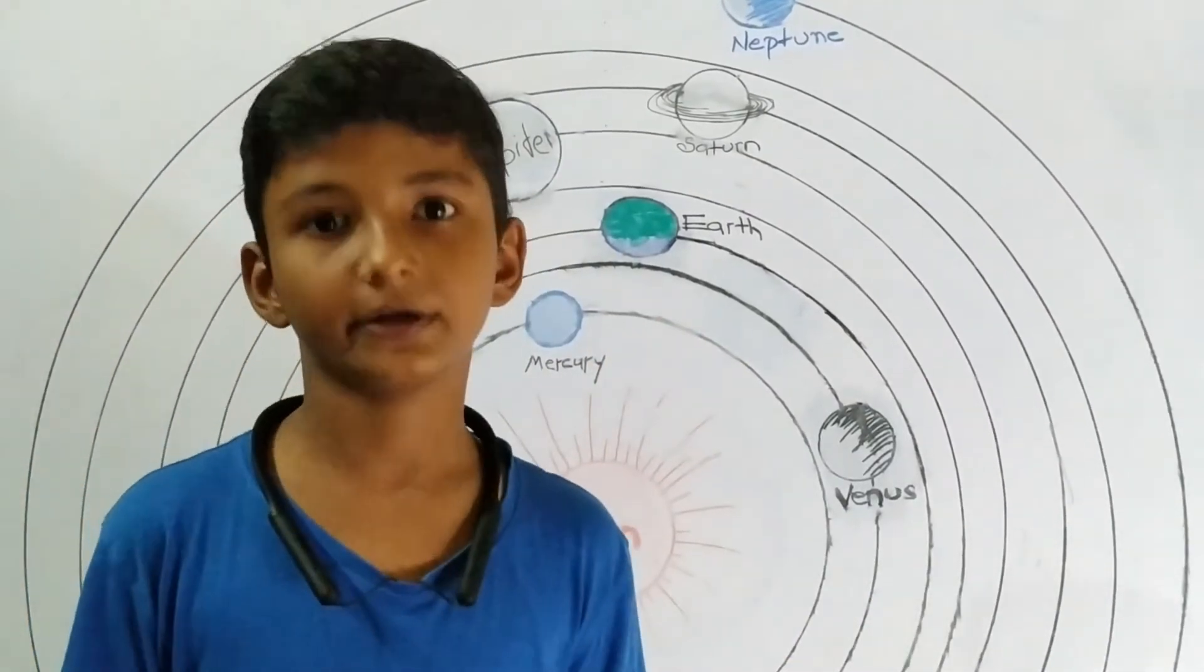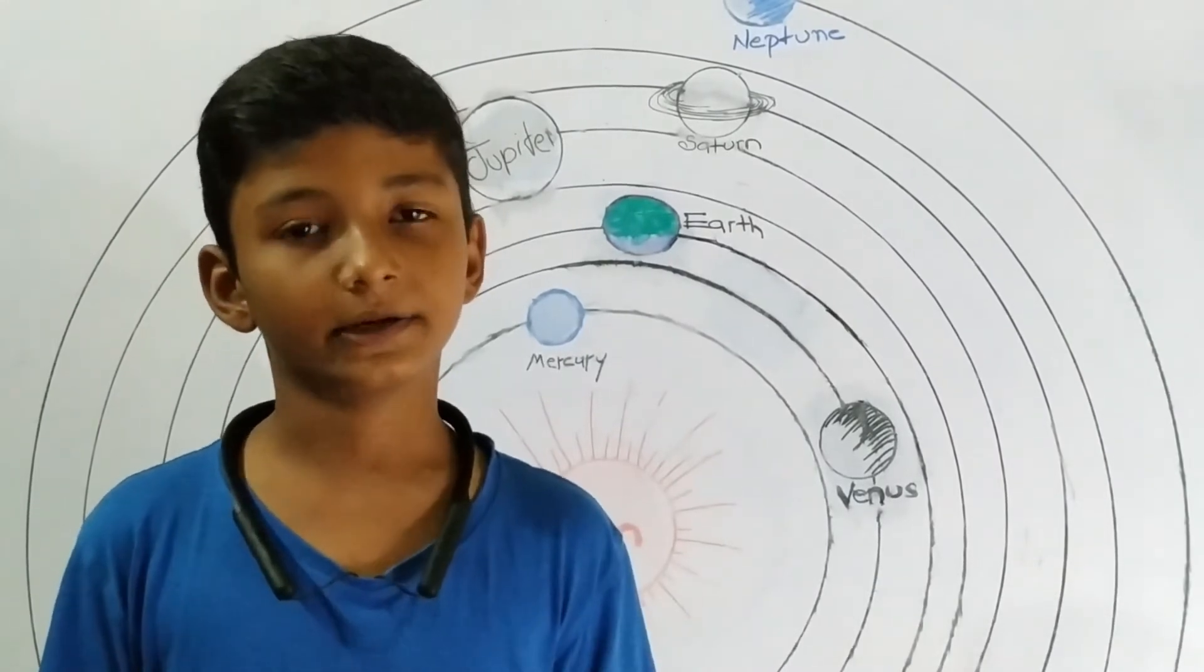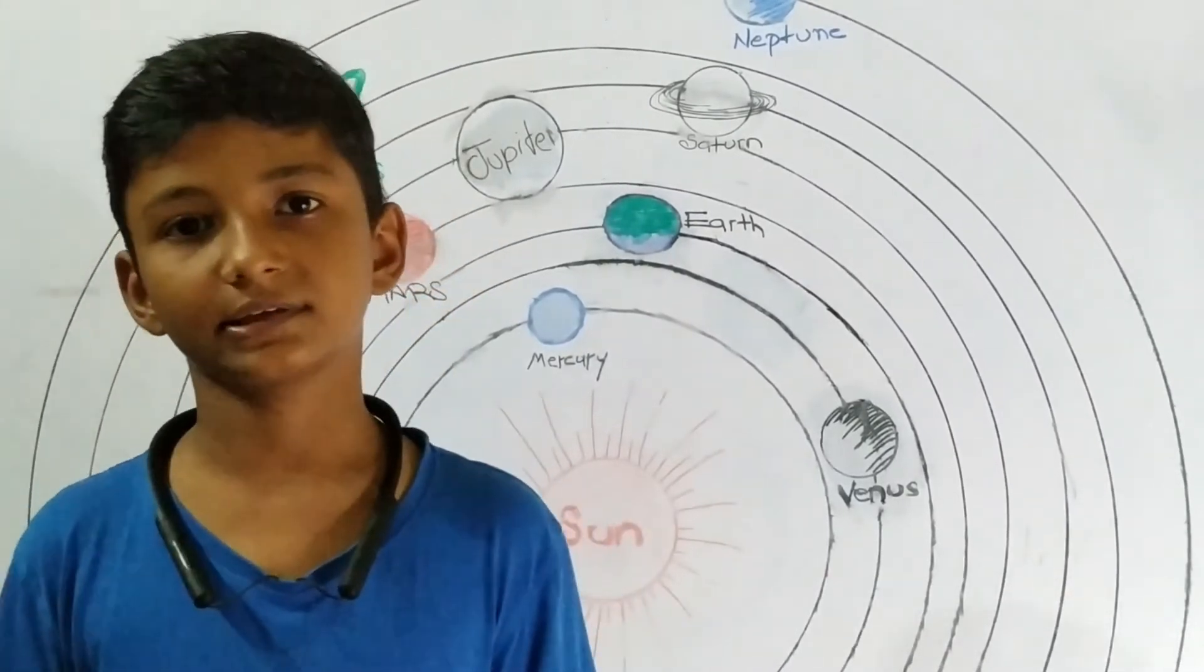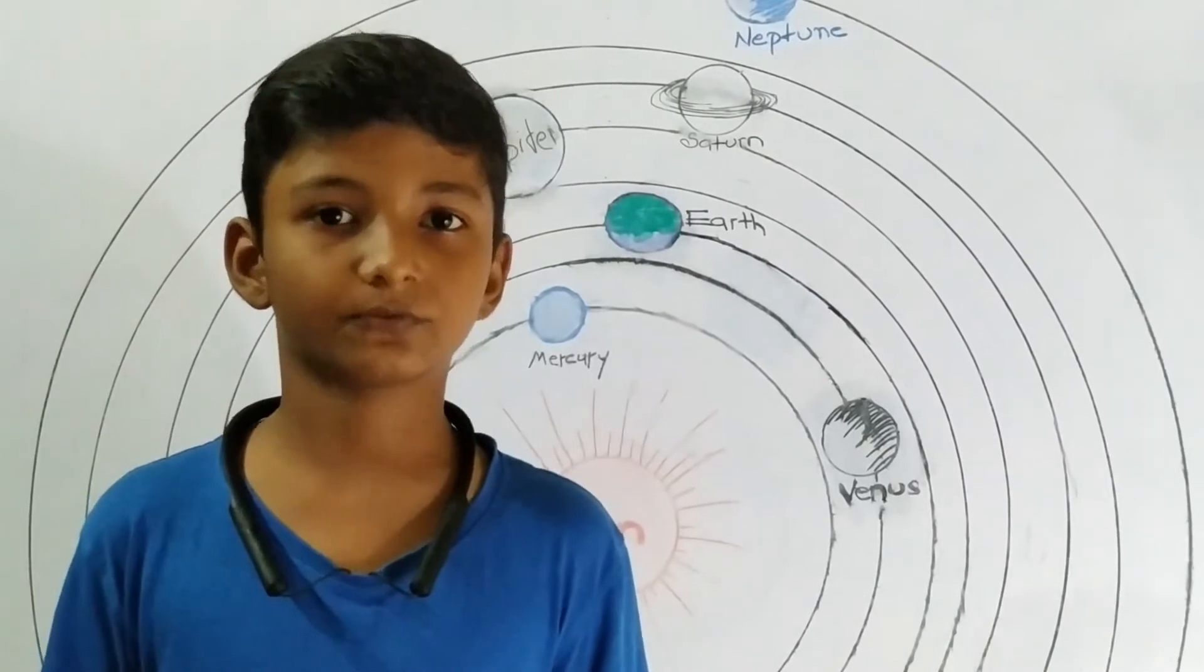The conditions required for life on Earth are the presence of atmosphere, presence of water, the right size, and the right distance from the Sun so it can receive the correct amount of sunlight.